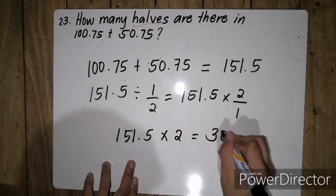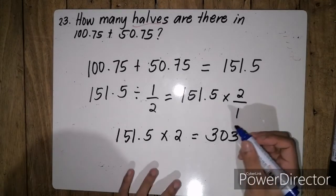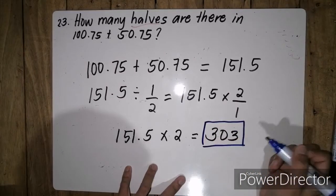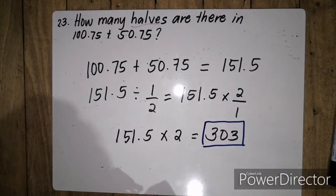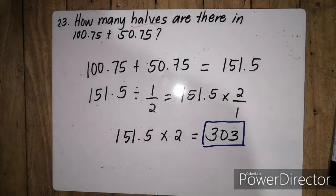So there are 303 halves in 100.75 plus 50.75. The answer for this problem is 303.